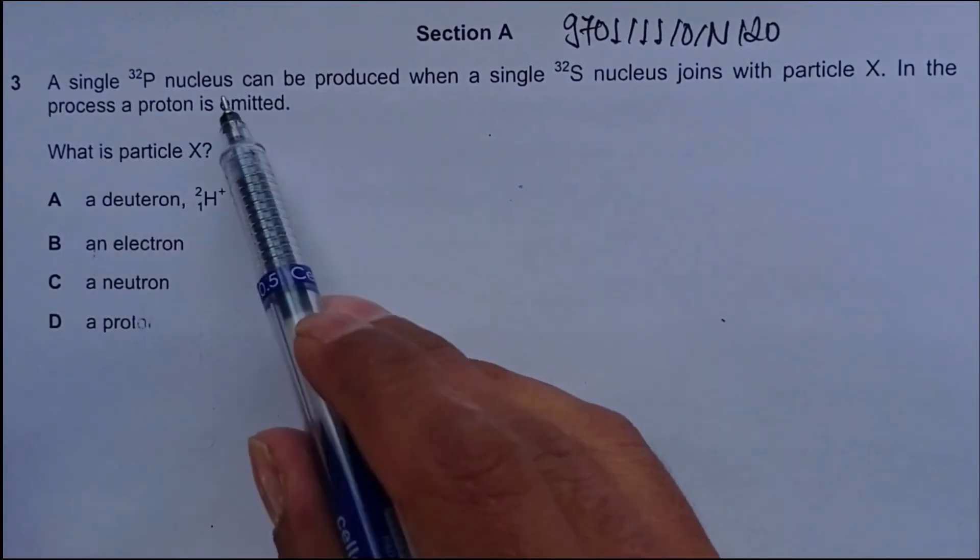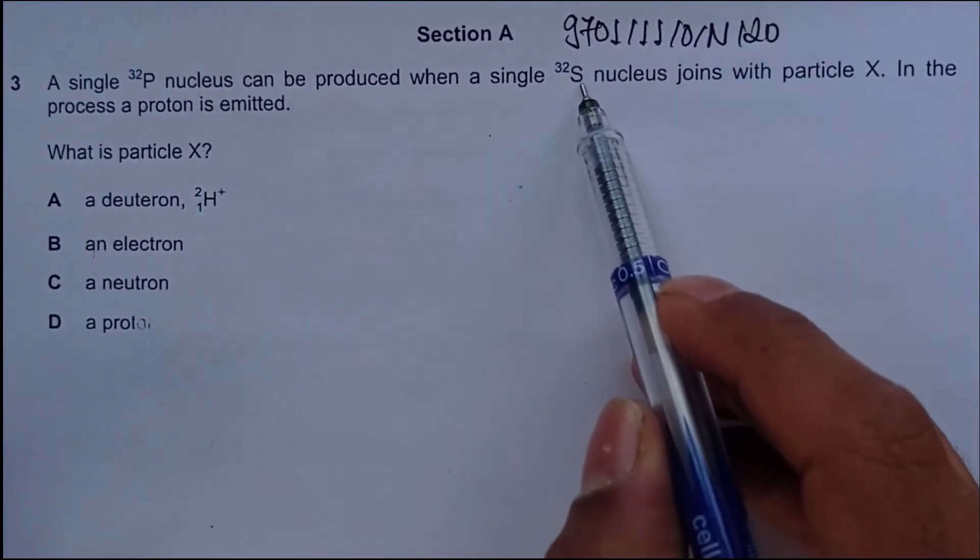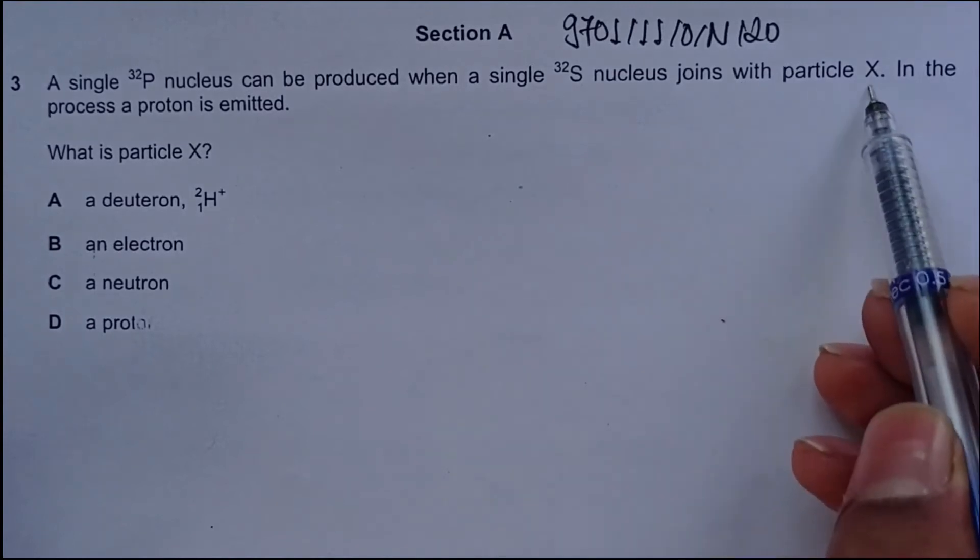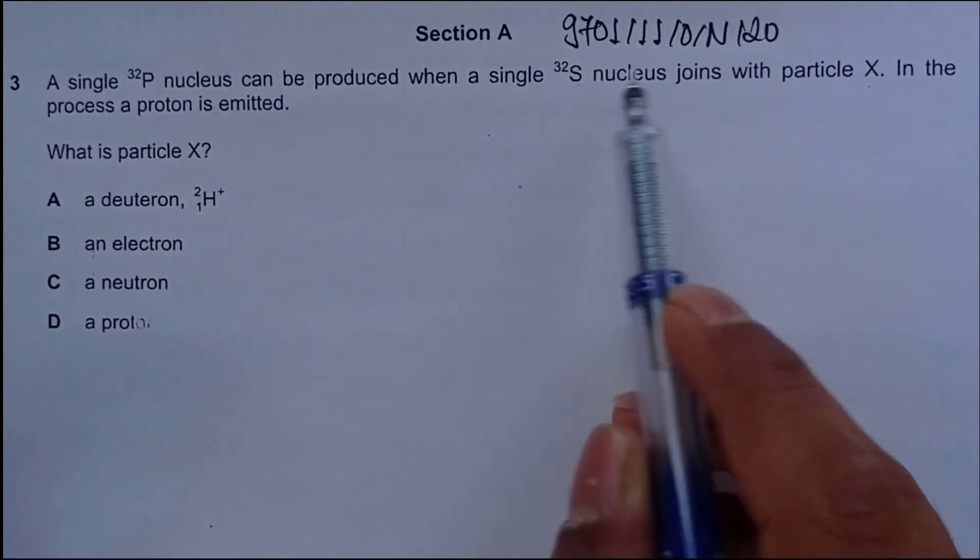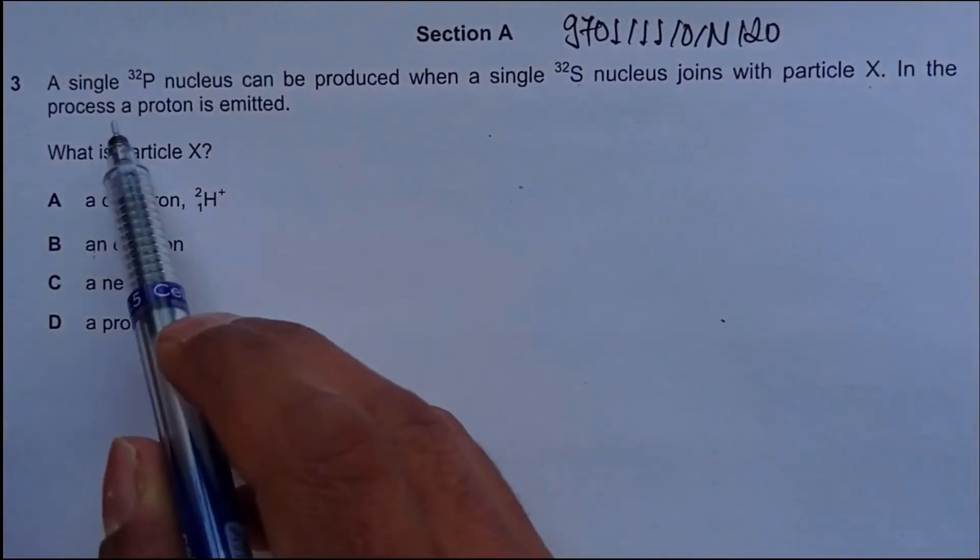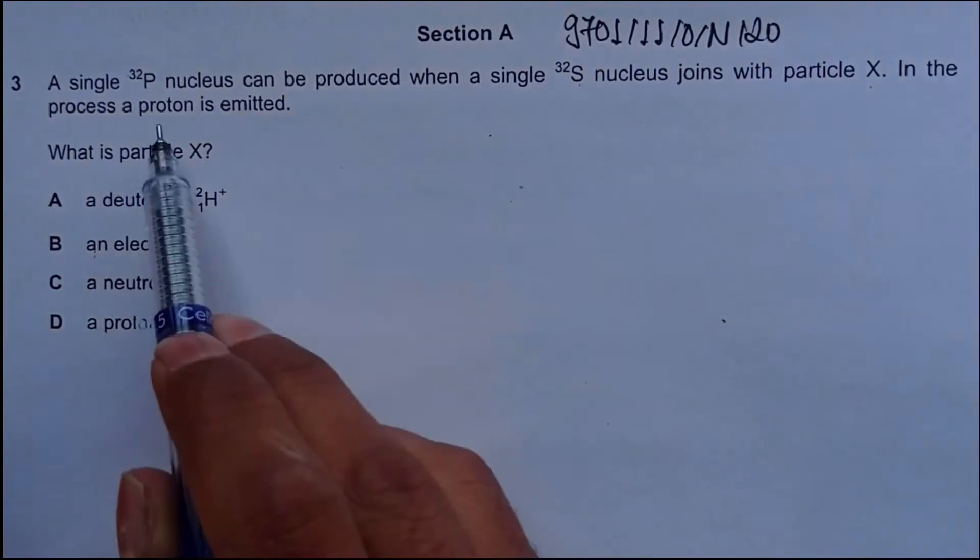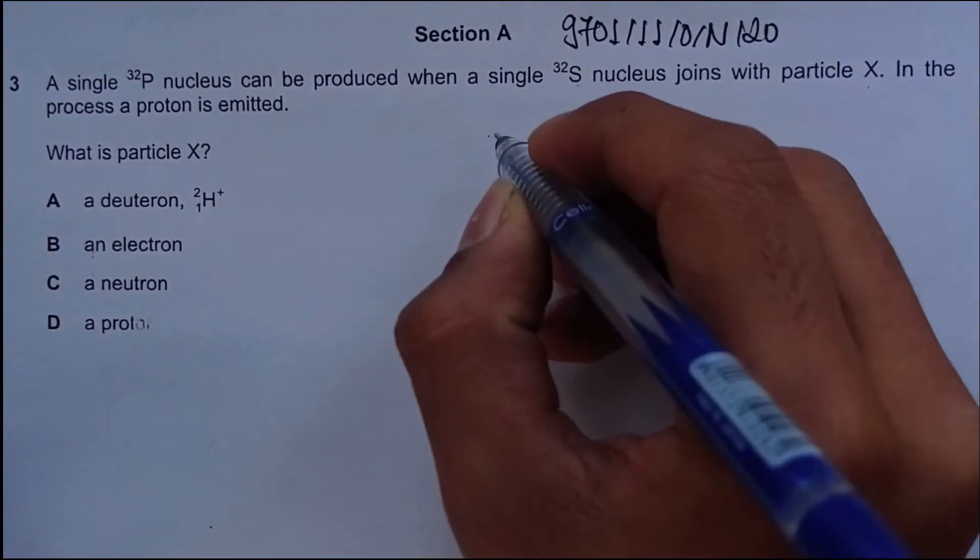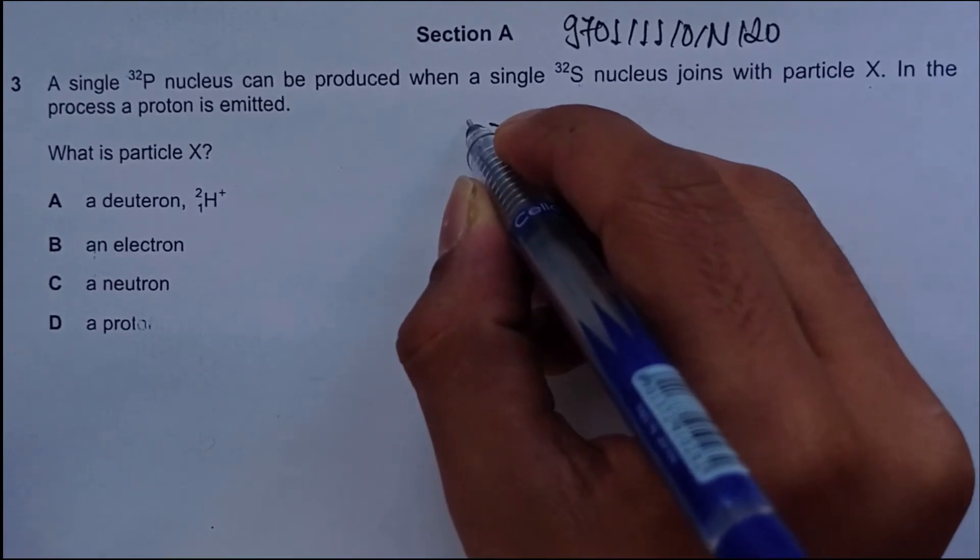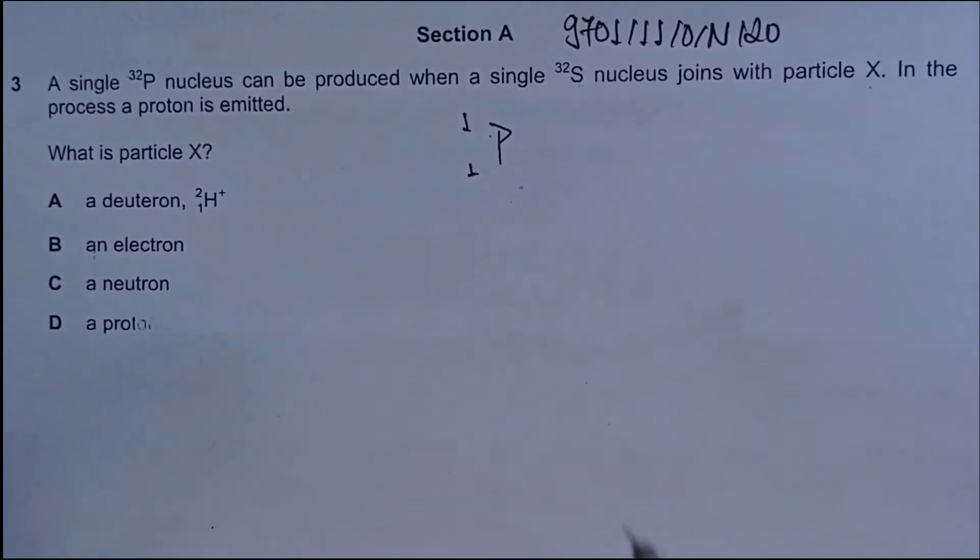A single phosphorus-32 nucleus can be produced when a single sulfur-32 nucleus joins with particle X. Sulfur and particle X join to give phosphorus-32. In the process, a proton is also emitted, so we'll have proton as one of the products as well. What is particle X? We have to deduce what X is.